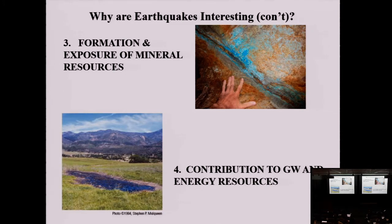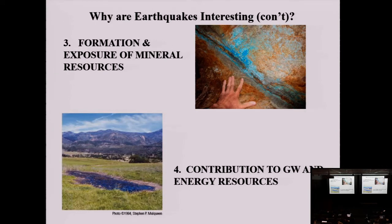They can also contribute to energy resources. This is a petroleum seep in Ojai, California, resulting from the 1994 Northridge earthquake. There was an unmapped oil reserve—we didn't know it was there. An earthquake happened, a fault zone was created, and oil that was deep within Earth started seeping out. We can then develop an oil drilling operation to access that natural resource. The same principle applies to groundwater. Earthquakes are good at forming and revealing energy and mineral resources.